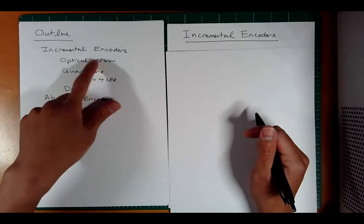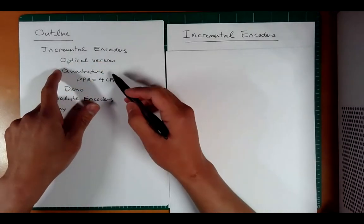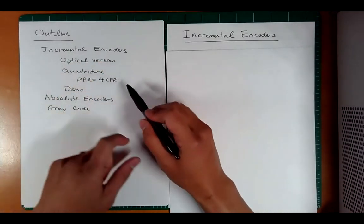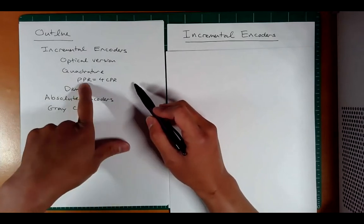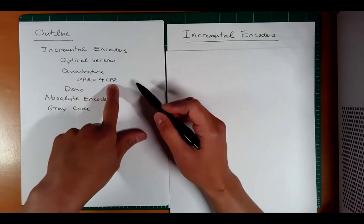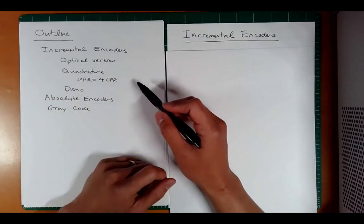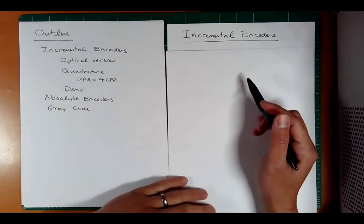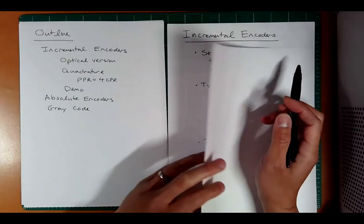So what are we going to cover for incremental? We're going to look at an optical version, and we're going to look at this concept called quadrature, which is the fact that the pulses per revolution is going to be four times the counts per revolution, and we'll look at a little demo to really hopefully hit this home.